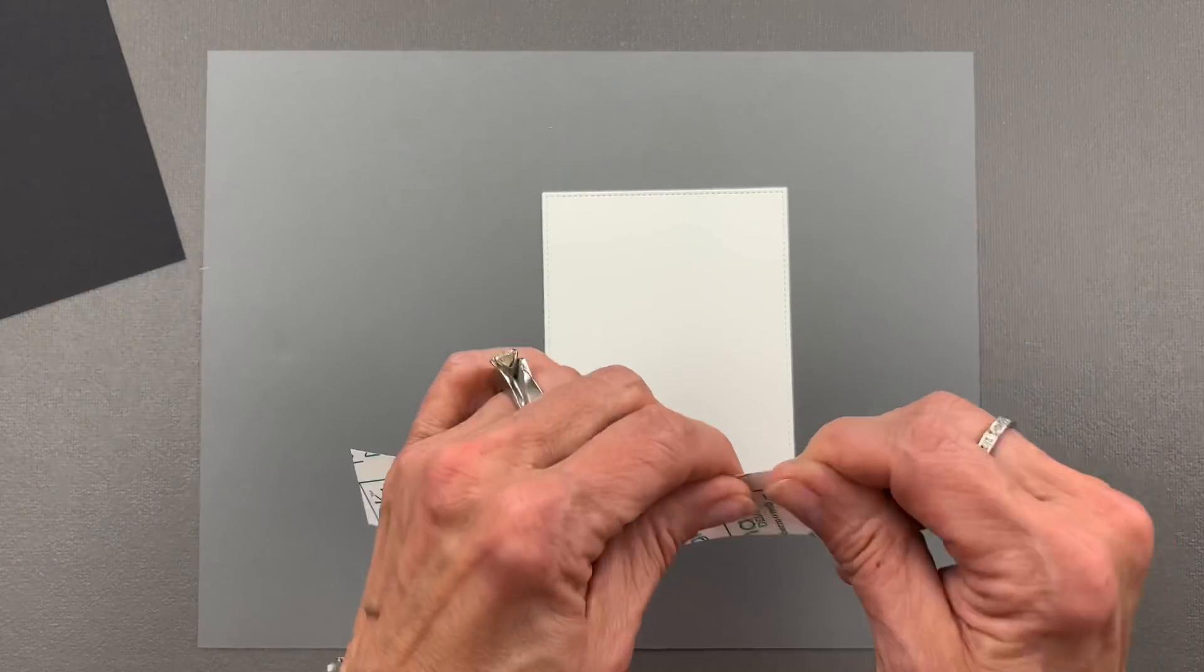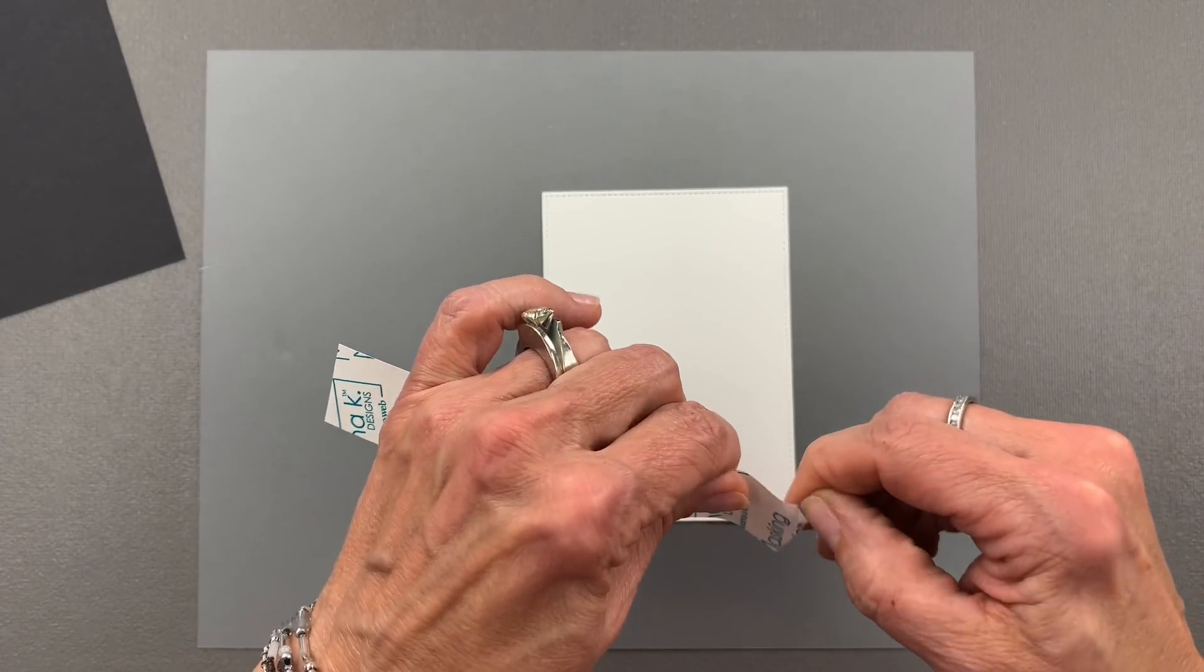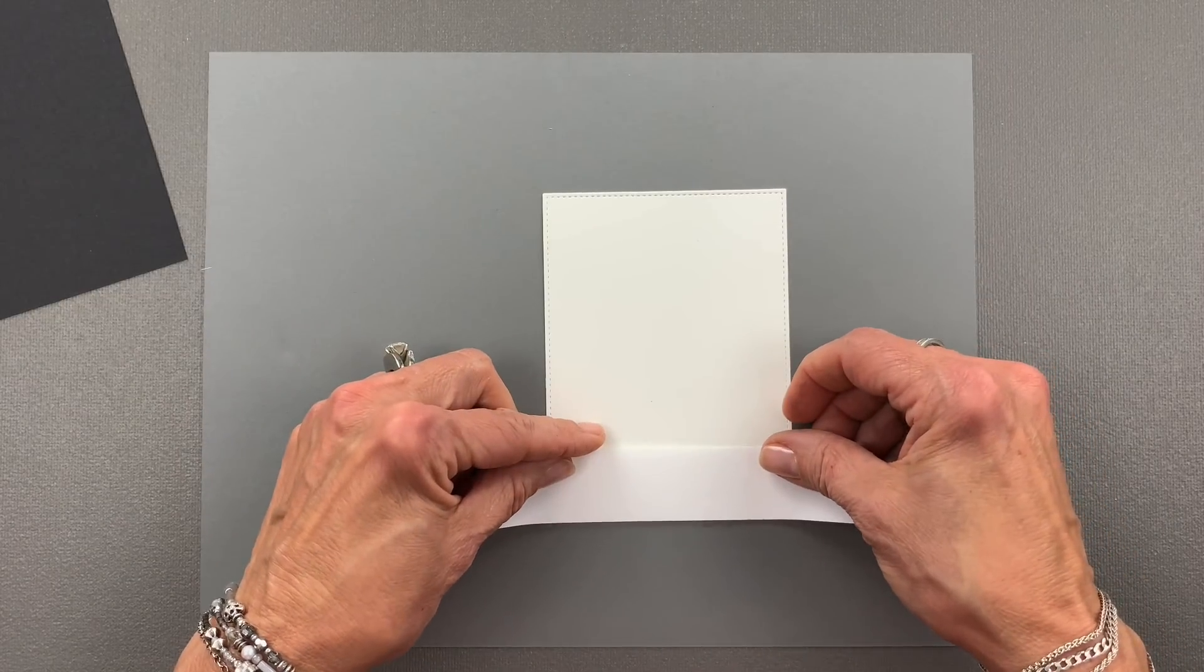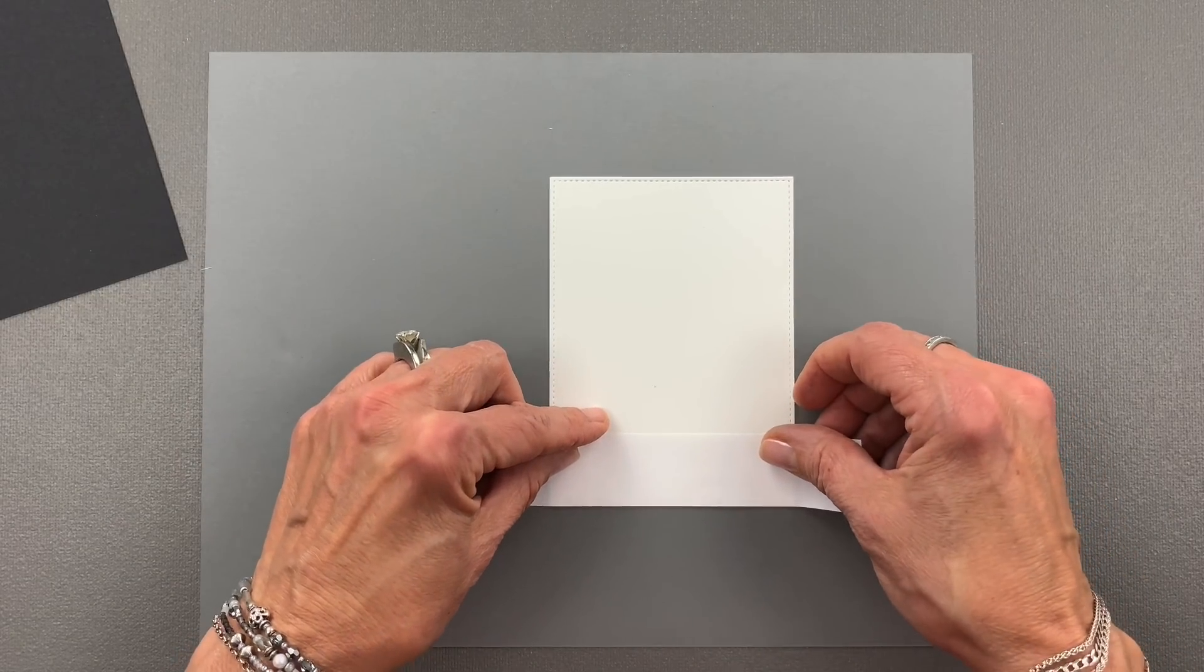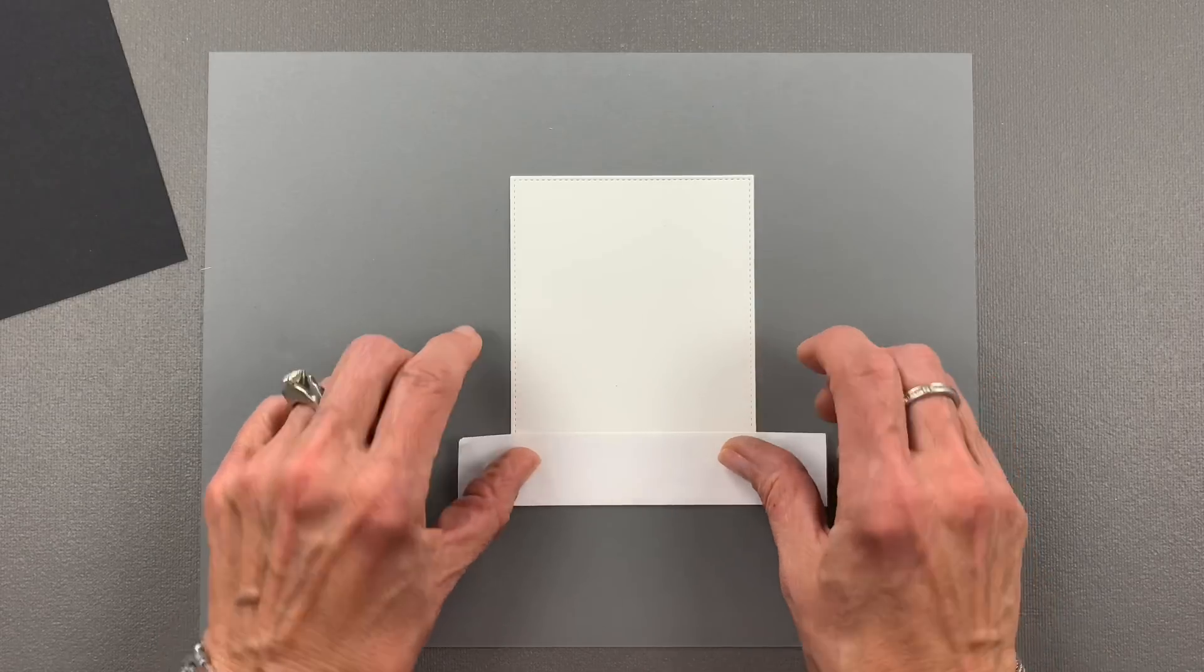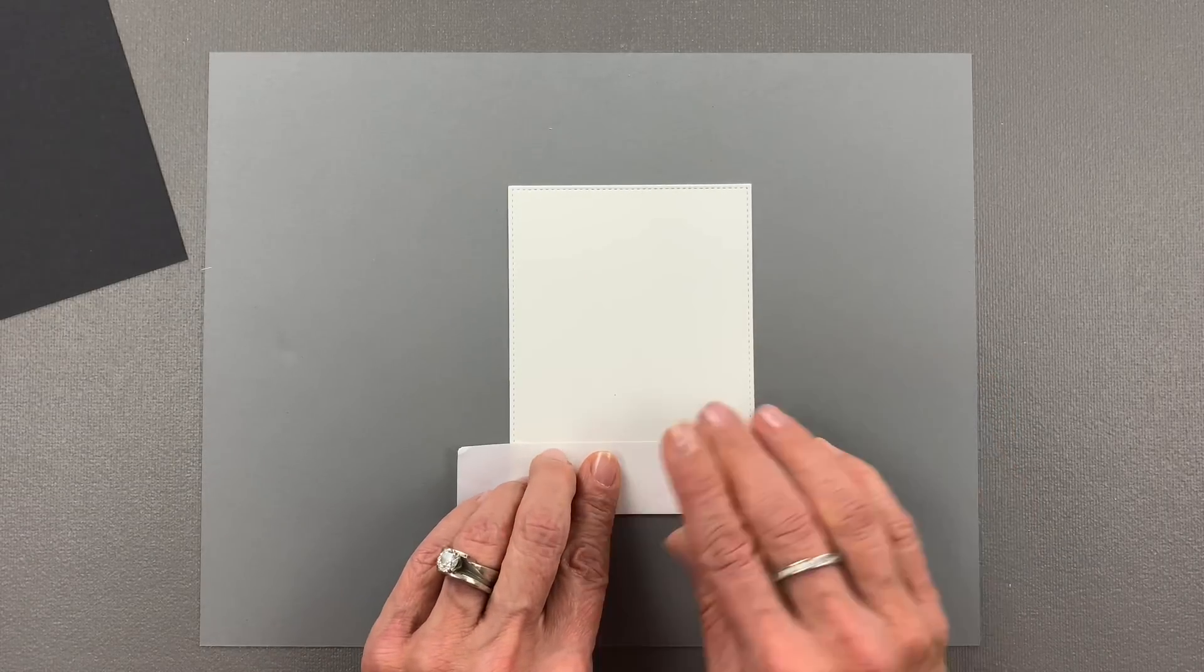To begin I'm going to take this Masking Magic and place it right across the bottom of this card. That will also help it stick to the piece of cardstock that I'm blending on here and keep everything in place.